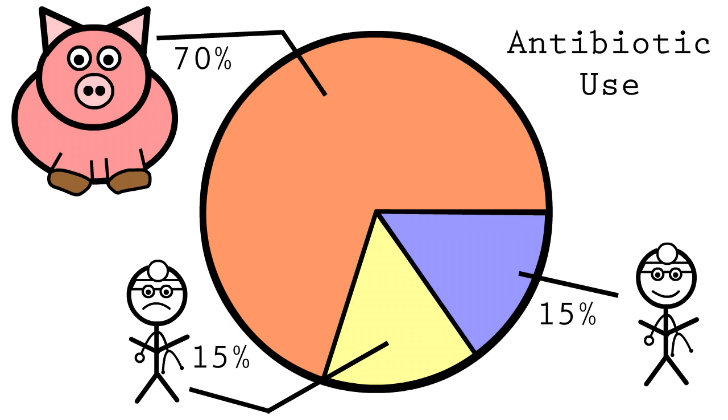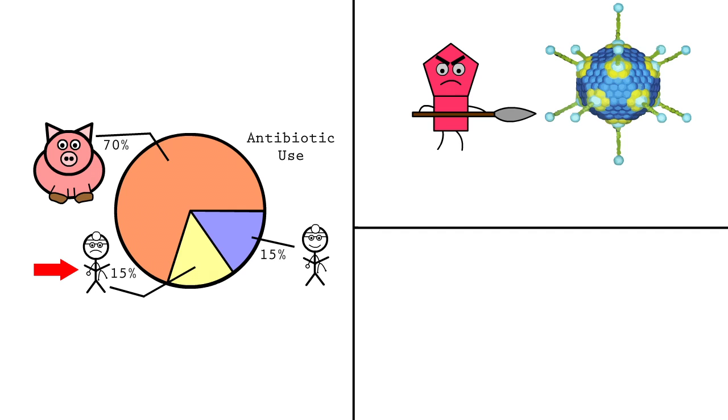So what can you do to help slow down the development of resistance? While the 70% of antibiotics used to promote growth in animals may be difficult to combat, the 15% used inappropriately in humans can be addressed now. Antibiotics have no effect on viral infections like the common cold, so physicians should not prescribe them if they're not warranted.